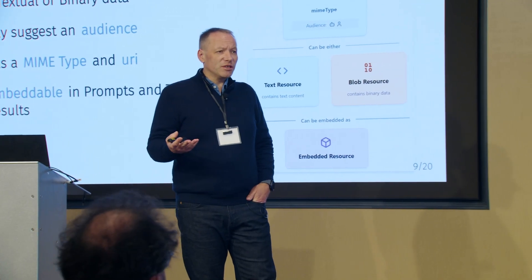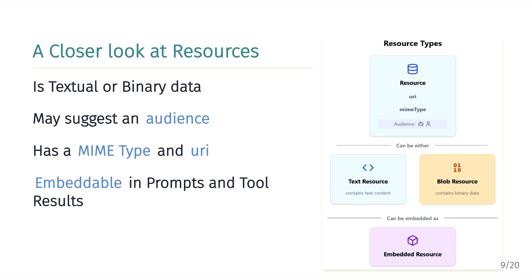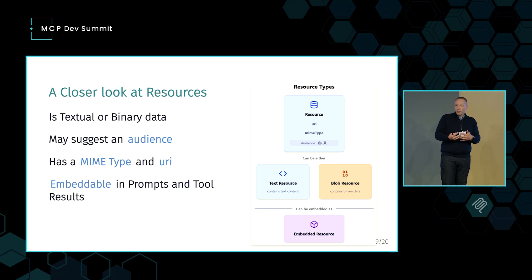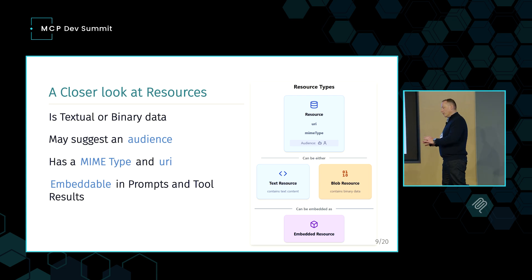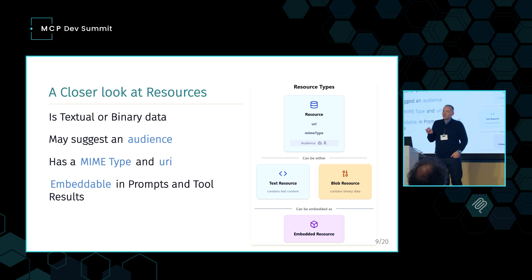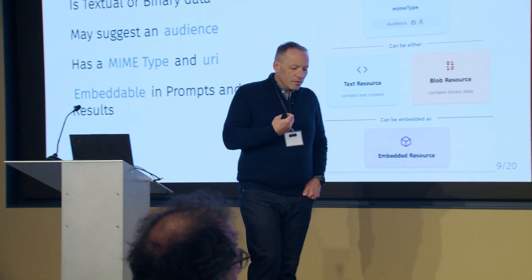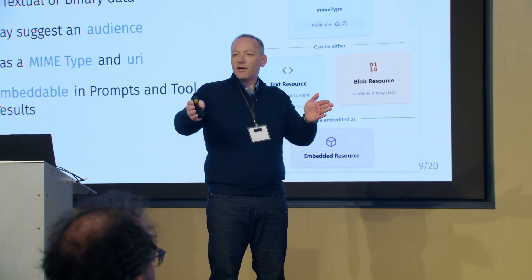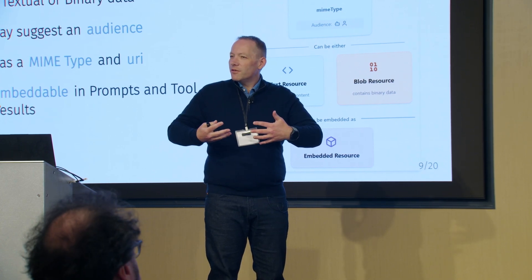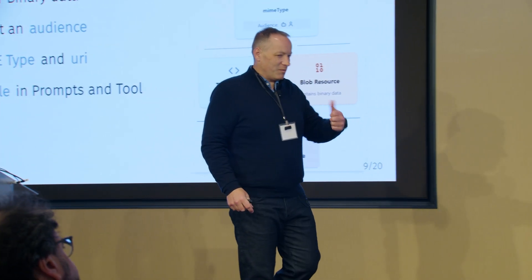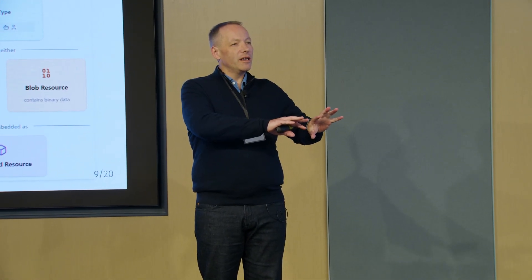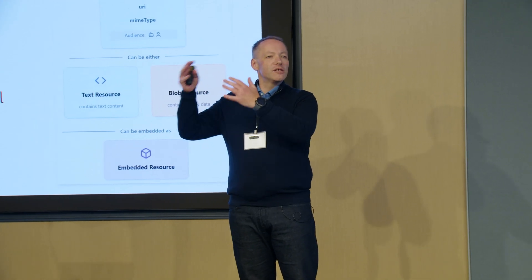Resources are straightforward: they represent text or binary data, they have a MIME type which tells us the shape of the data, and a URI which tells us where to find the thing and what it is. They're embeddable in prompts and tool results. Because we have a MIME type, we get good semantics — for example, if I see a Python file as application/x-python and I'm writing an IDE, I might want to type-check it, lint it, or display it in a special way before coercing it to text/plain for the LLM to tokenize and consume.